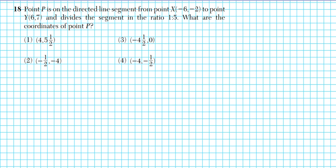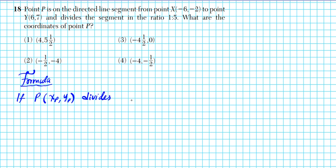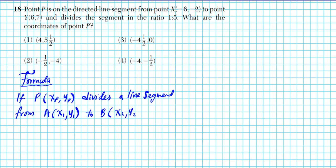We're going to get started by taking a look at the formula for a segment divided in a particular ratio. Let's write down the formula first and then apply it to this scenario. If point P with coordinates (Xp, Yp) divides a line segment from point A at (X1, Y1) to point B at (X2, Y2) in the ratio a to b...